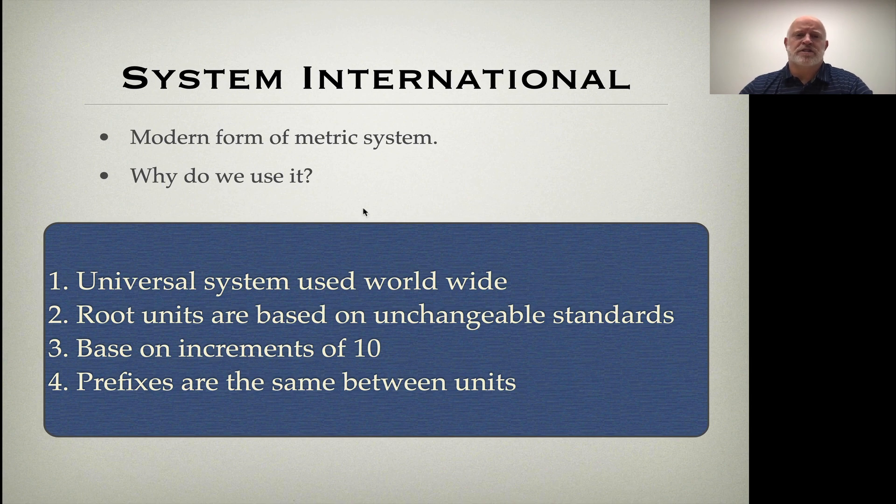Why else is it the best one that we have? The root units are based on unchangeable standards. What I mean by that is we have standardized what the meter is, what the second is, what the kilogram is. And they're not physical objects. They are things that even if our entire planet were to explode and we had a small group go colonize another planet with a different orbital system, different day cycle, different gravitational pull, we could still establish what a kilogram is, what a meter is, and what time was on that new planet. It's important that we have things that don't change. The meter is now officially defined by the speed of light in a vacuum over a certain amount of time. Time is officially defined by the radioactive decay of cesium.